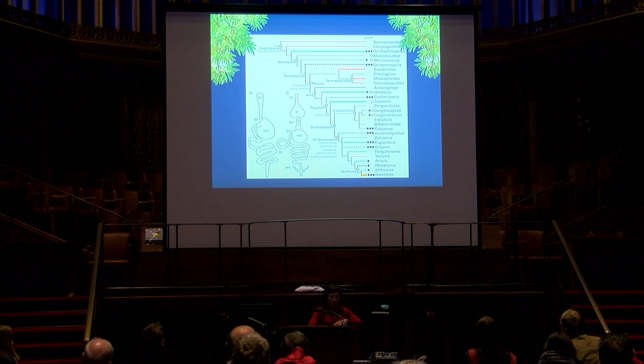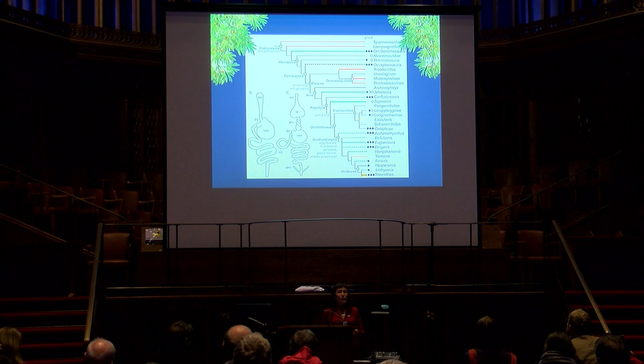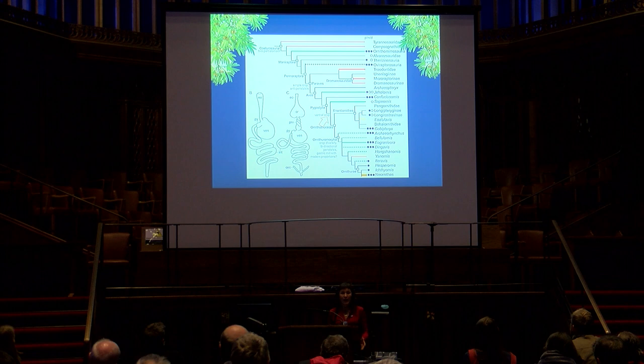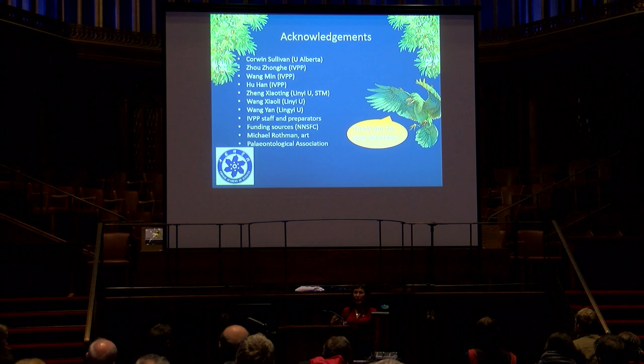Summarizing all this data — when can we say the modern avian digestive system evolved? Given that we have a ventrally located crop in Sapeornis as well as a gastrolith mass and grinding gizzard, we can suggest this is where the modern avian digestive system evolved. However, we know that teeth — including some very bizarre tooth morphologies — persisted to the very end of the Cretaceous. So we can actually say that the modern avian feeding mechanism is restricted only to Neornithes. Thank you very much to all the people listed here, and especially to the Palaeontological Association for inviting me to give this talk.